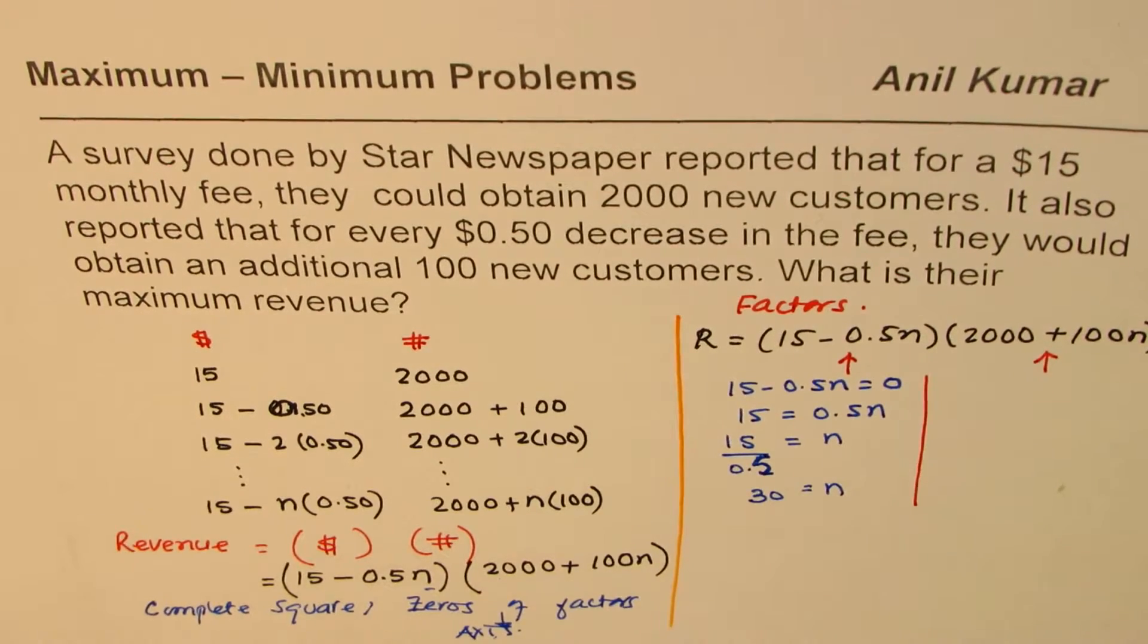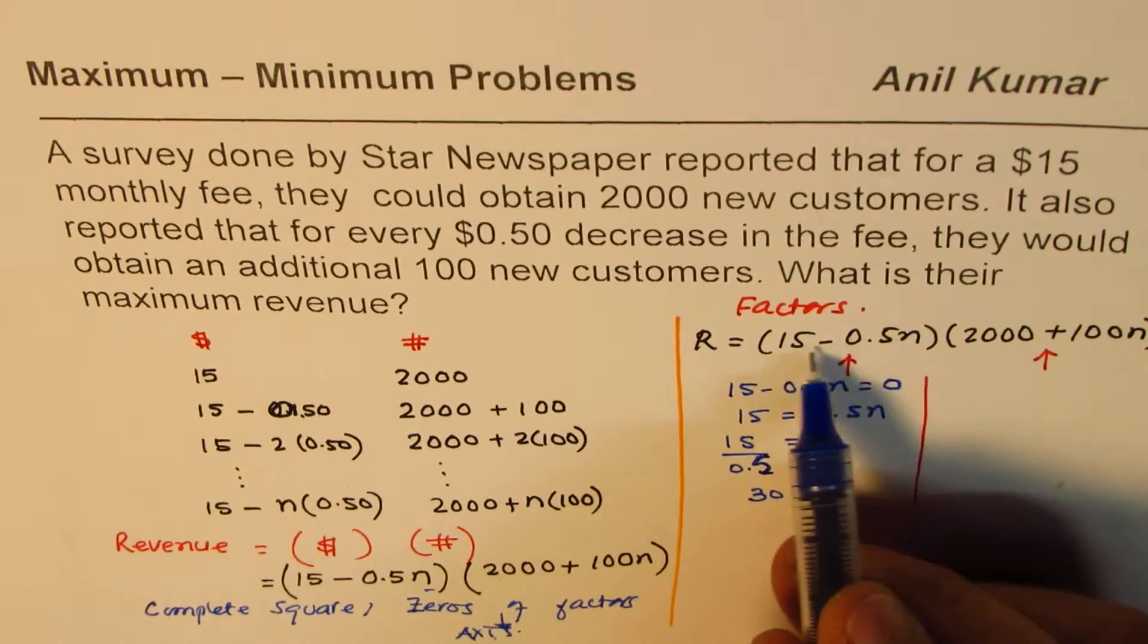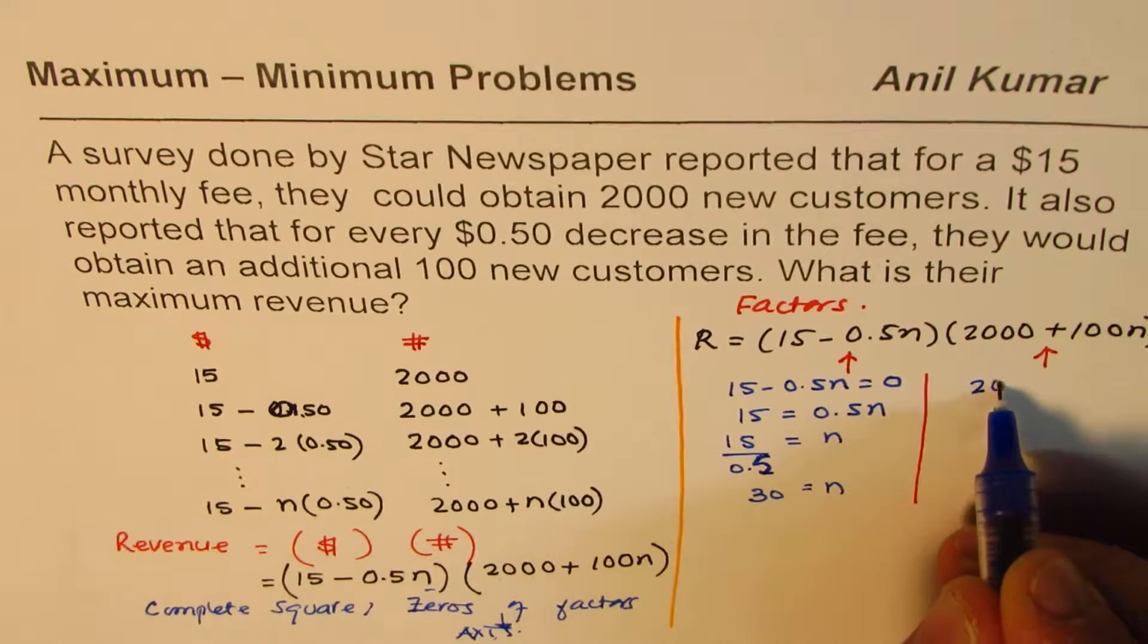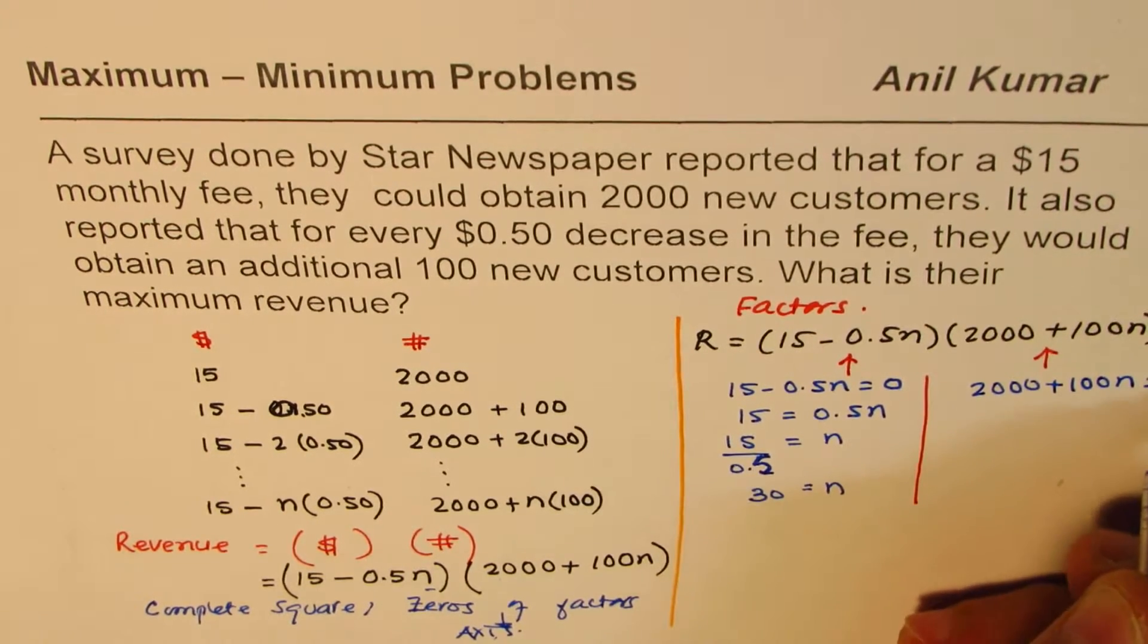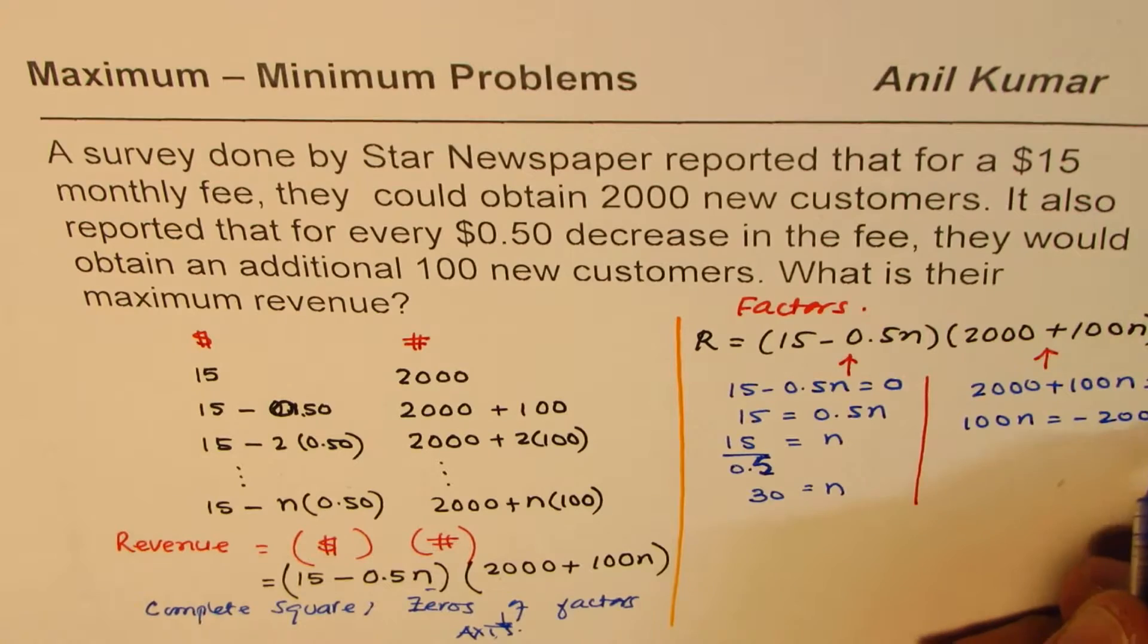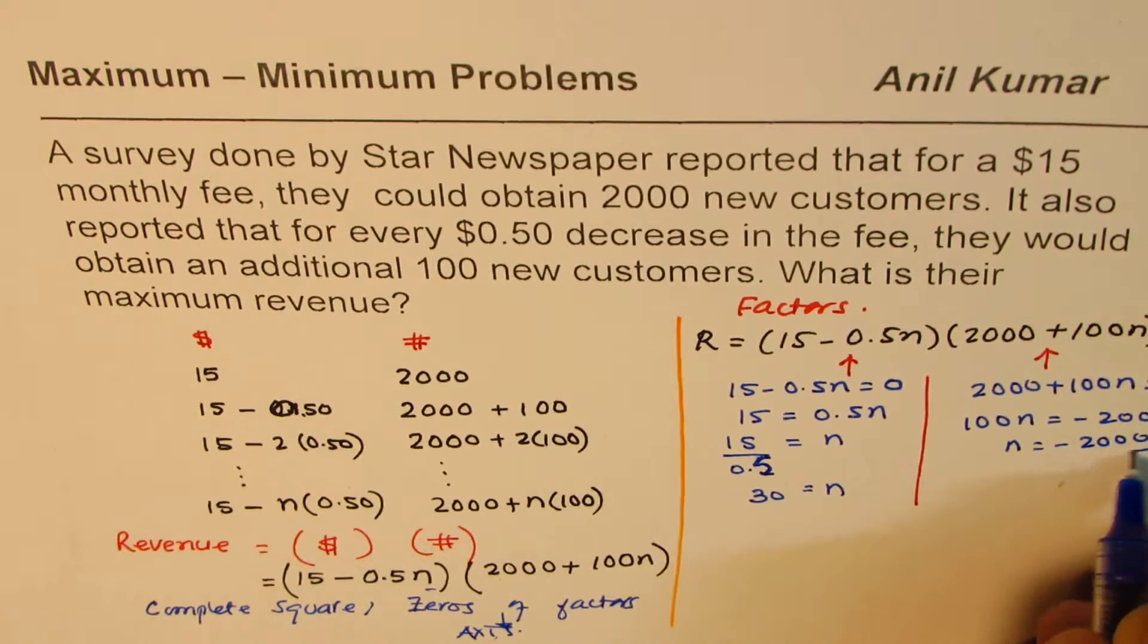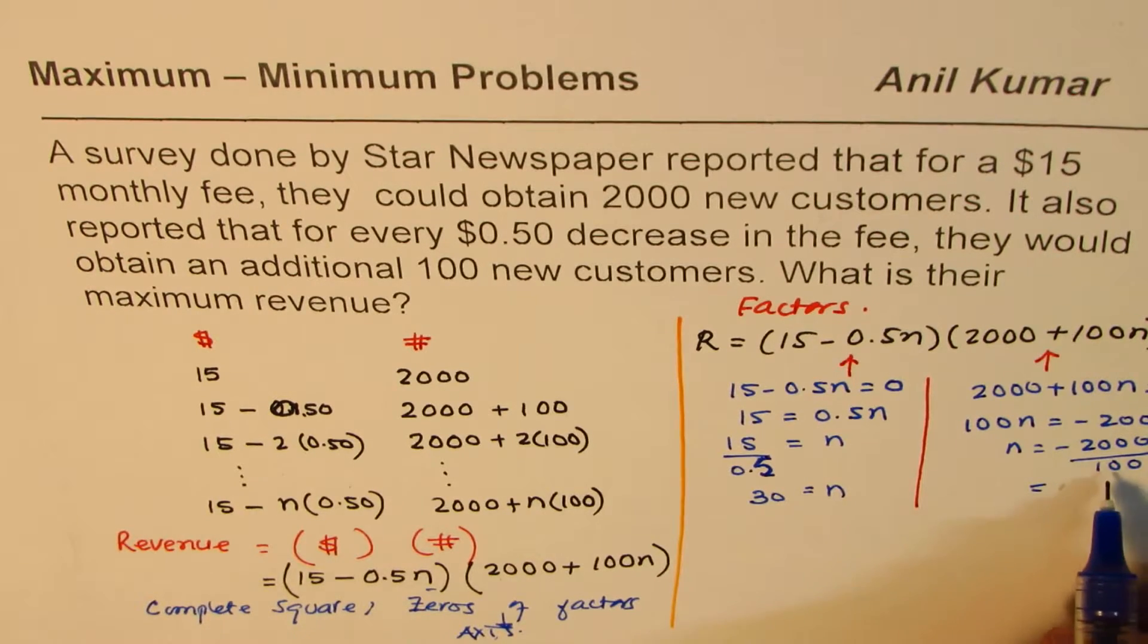When is the other factor zero? So 15 minus 15 will make it zero. Now to make this zero, we have 2000 plus 100n equals to zero. So we can say 100n equals to minus 2000 or n is equals to minus 2000 divided by 100, which gives you the value of minus 20.